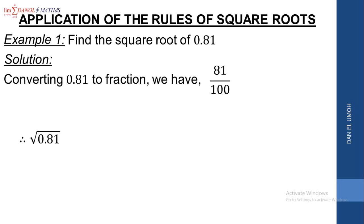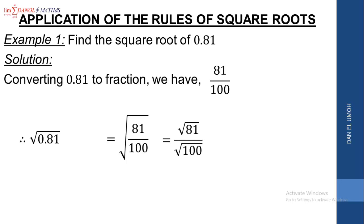Therefore, the square root of 0.81 equals the square root of 81 over 100. According to our rule, this is the same thing as the square root of 81 all over the square root of 100. The square root of 81 is 9, and the square root of 100 is 10. So we now have 9 over 10, and 9 over 10 equals 0.9. We can conclude that the square root of 0.81 is equal to 0.9.